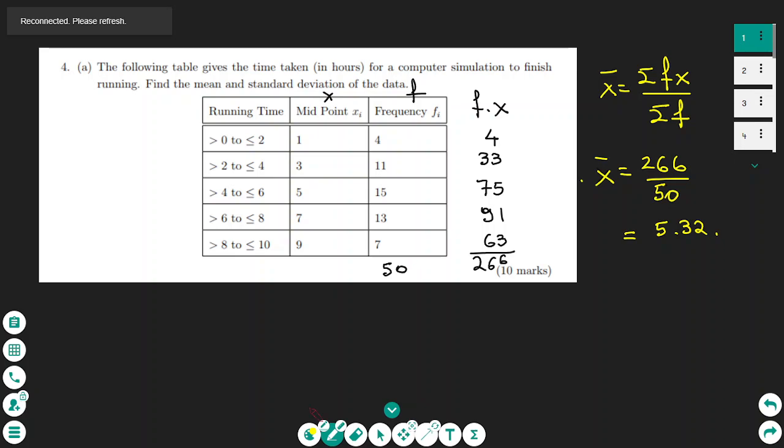On the table we have three columns. The first column are the times, the running times. The second column are the midpoints, and the third column is the frequency.